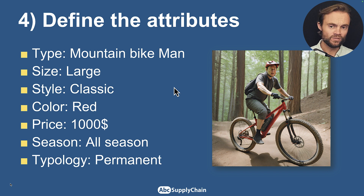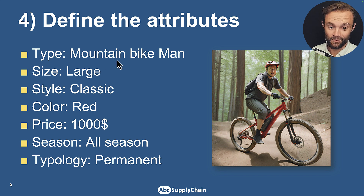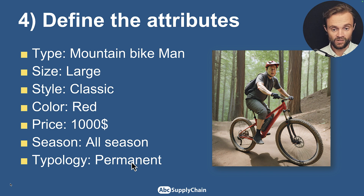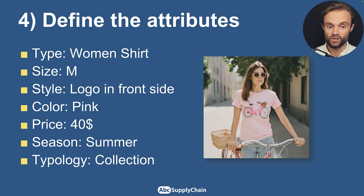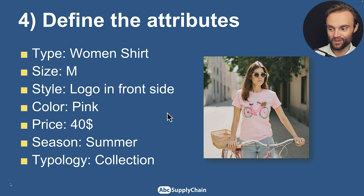Step four: define the attributes of your products so you can compare them — the specifications you can use to find the most similar products. For example: the type of product like mountain bike for men, the size, style, color, price, season (winter or summer), and typology (permanent or fast fashion collection). You can do the same for fast fashion — for example: women's shirt, size medium, logo in front, pink, summer collection, and price.